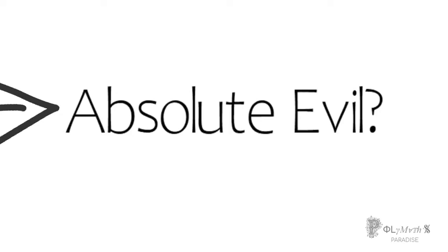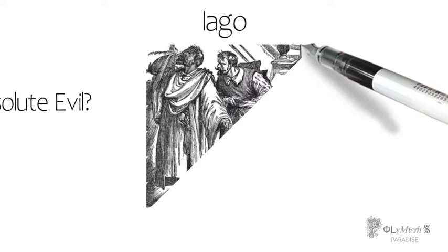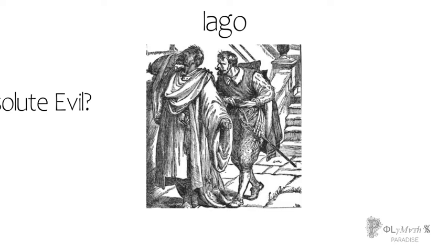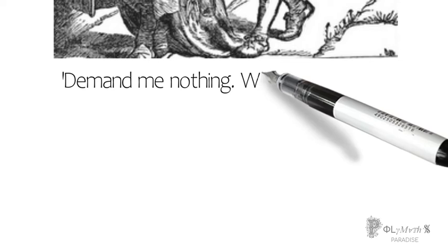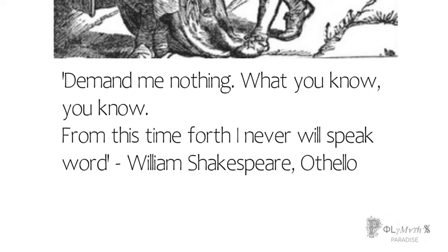The character of Iago in Shakespeare's Othello seems like a good candidate. He single-handedly manipulates the eponymous general and tricks him into killing his wife and later out of remorse himself. Why does he do this? Seemingly just because he can. In fact, even when he is apprehended and questioned about his motives, he refuses to tell them purely out of spite. Demand me nothing, he says. What you know, you know. From this time forth, I never will speak word.